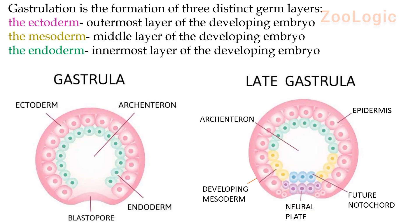At this stage, the cells of the blastula start to migrate, and the blastopore provides space that facilitates cell movement. The cells rearrange themselves into three germ layers — or tissue layers — known as ectoderm, mesoderm, and endoderm respectively. The outermost is the ectoderm, mesoderm is the middle one, while endoderm is the innermost. As you can see in the image, the ectoderm is the outermost layer, endoderm is shown in green as the innermost layer, while the developing mesoderm is shown in yellow.